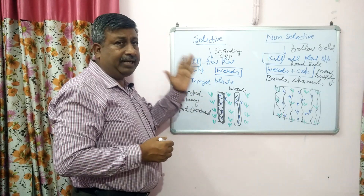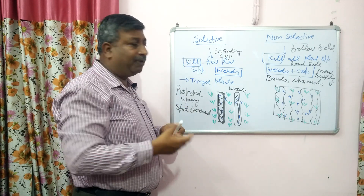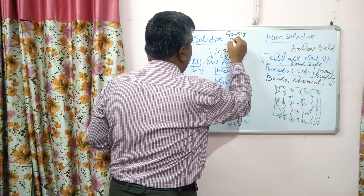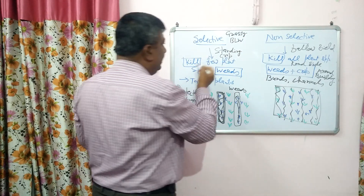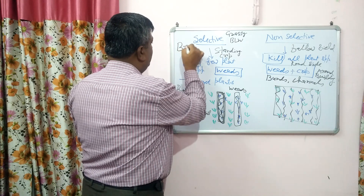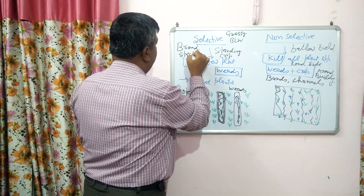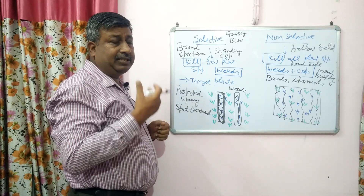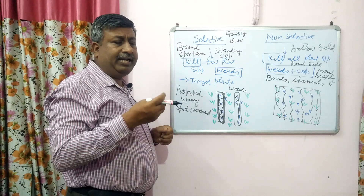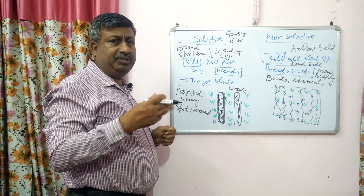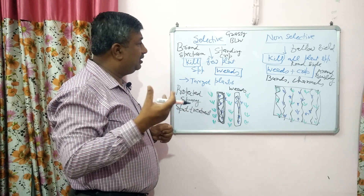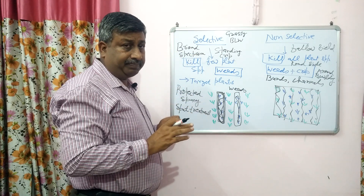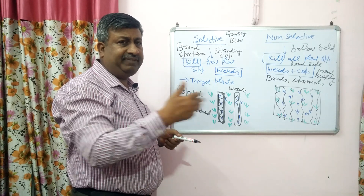If a selective herbicide kills many types of weeds — suppose it kills grassy weeds, broadleaf weeds, and many types of weeds — then it is called a broad spectrum herbicide. Nowadays many selective herbicides are broad spectrum; they kill many grassy species and broadleaf species. If a selective herbicide kills only one or two species — one grassy species or one or two broadleaf species — then it is termed as narrow spectrum. So a selective herbicide may be broad spectrum or narrow spectrum.